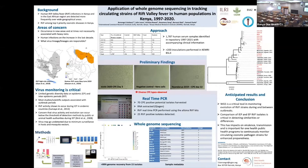Whereas isolation was performed in cell culture in the CHEMRI BSL-3 facility, this was followed by RNA extraction, PCR, and sequencing of the PCR-positive RVF isolates using the Illumina platform.